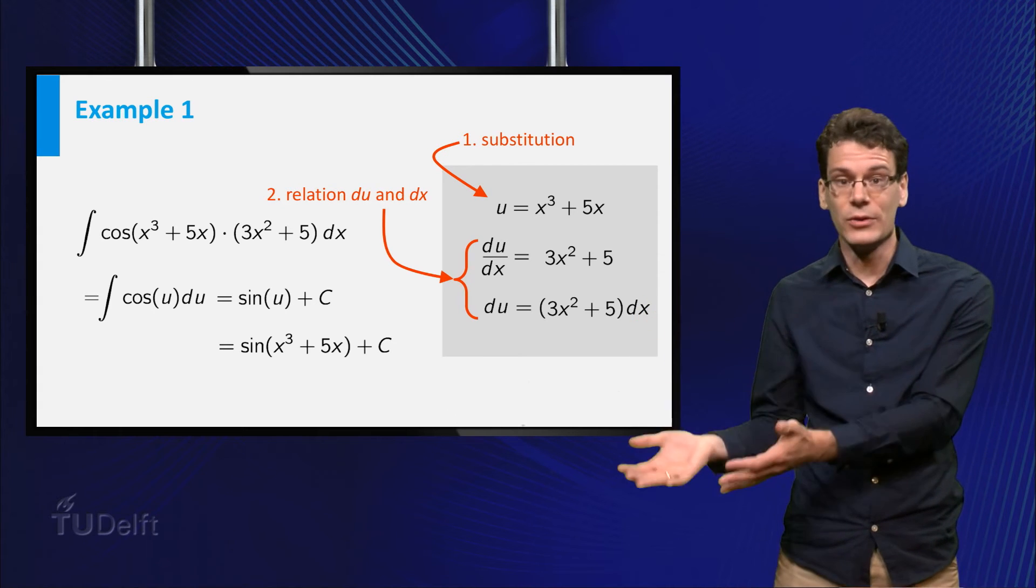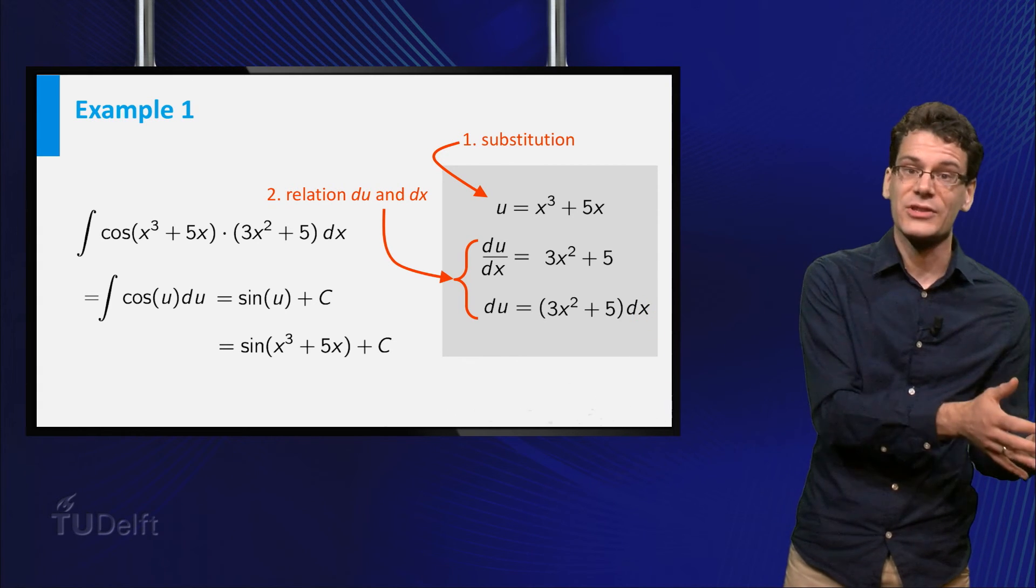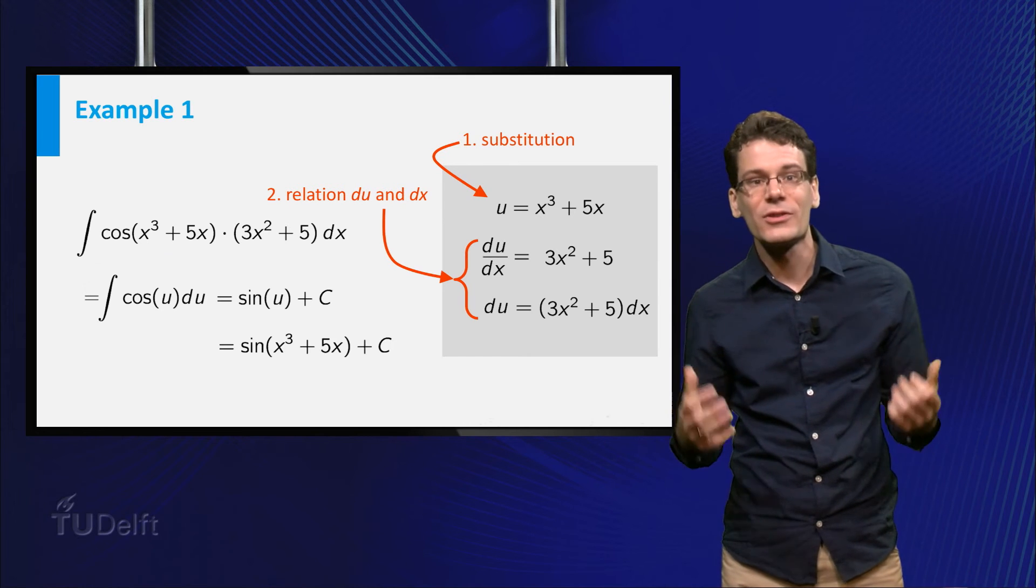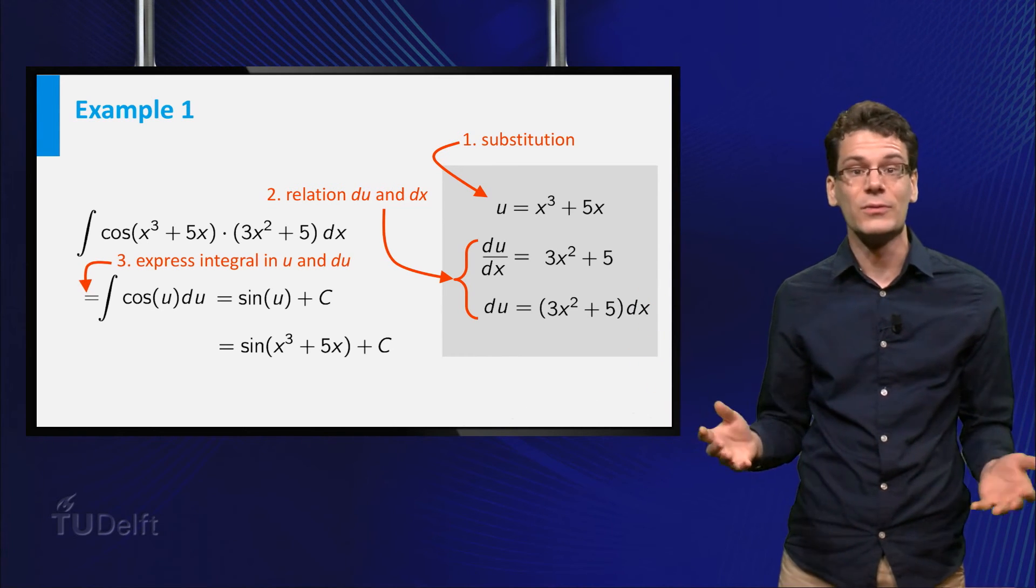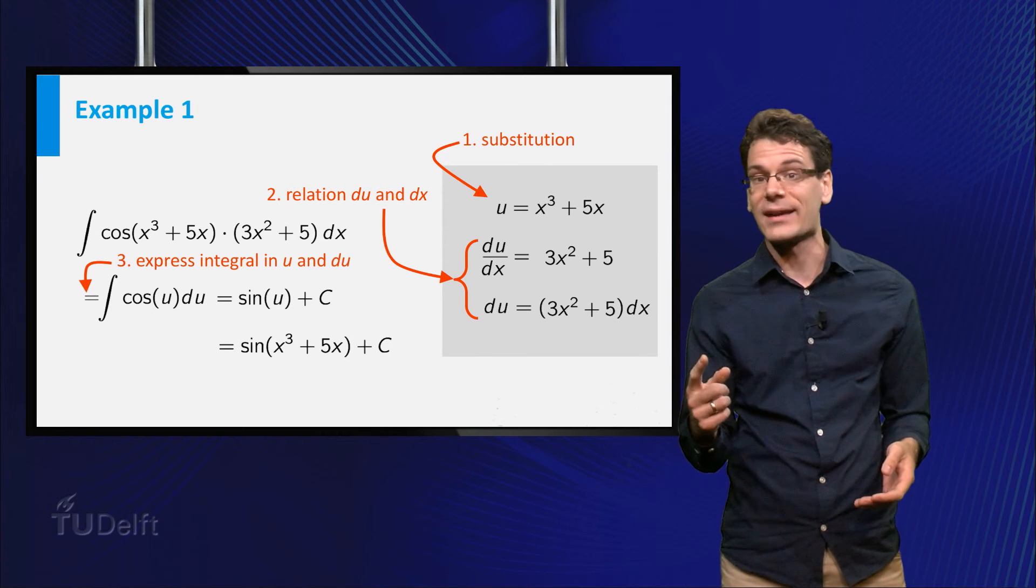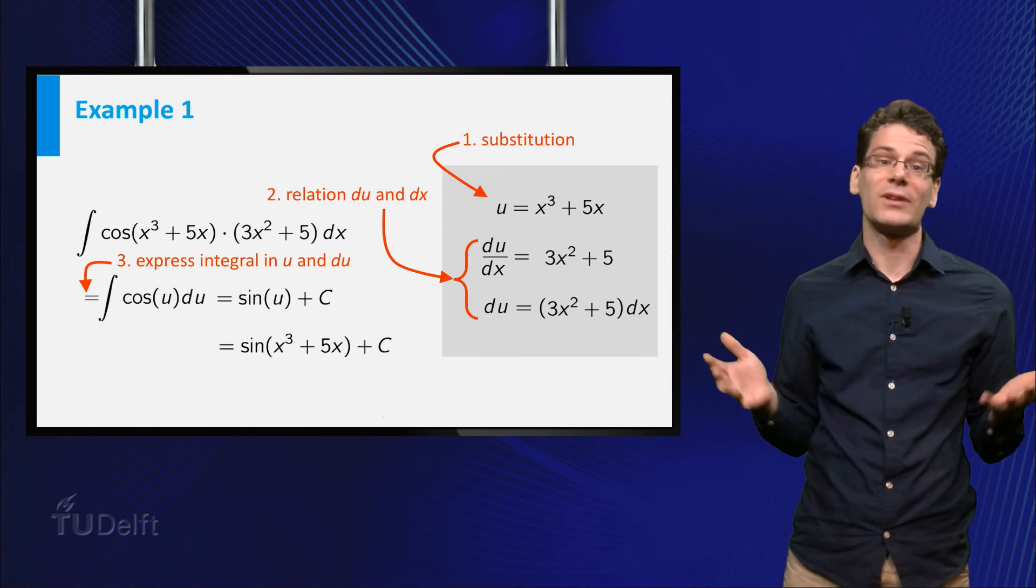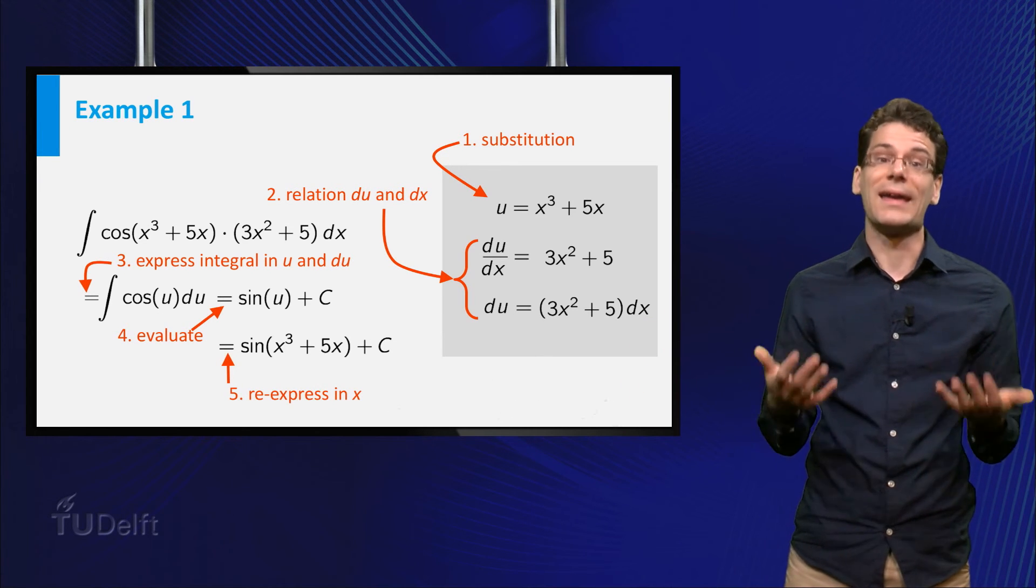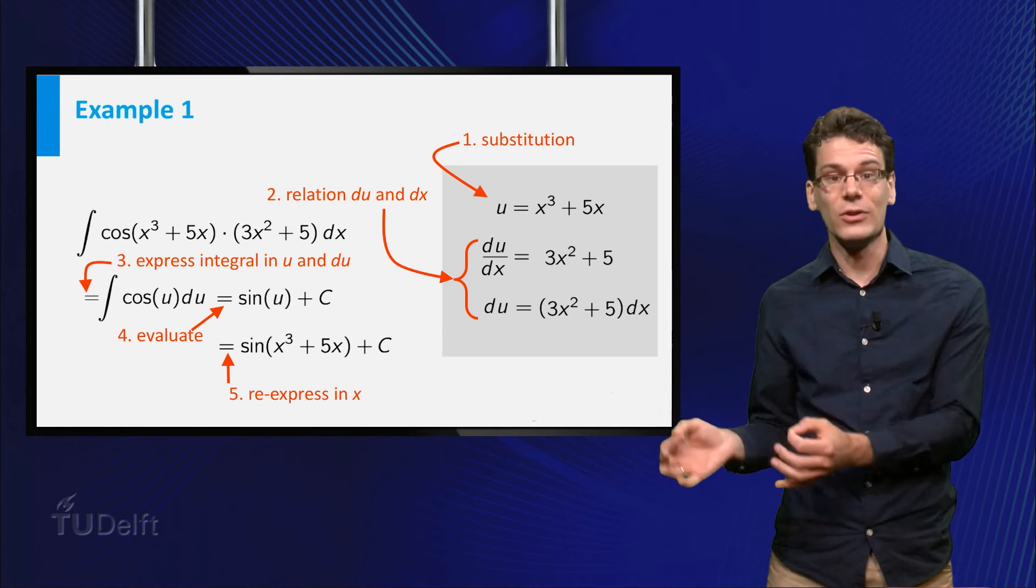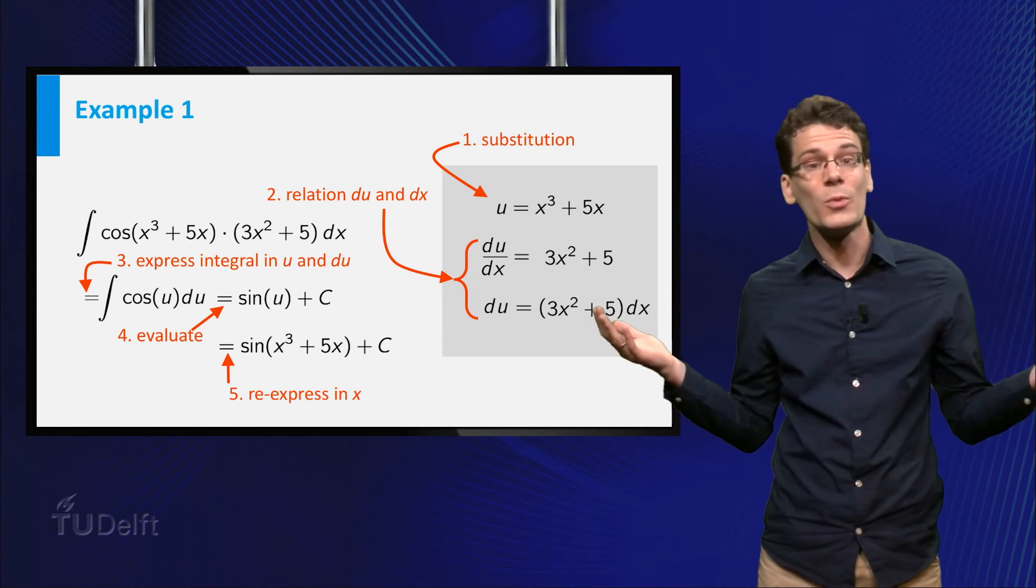Using the derivative of u, we find a relation between du, x and dx. Armed with these relations, we can re-express the integral completely in terms of u and du. There should be no more x or dx. This new integral can be evaluated. And finally, we return to the original variable x, again by using the relation between u and x. And then we are done.